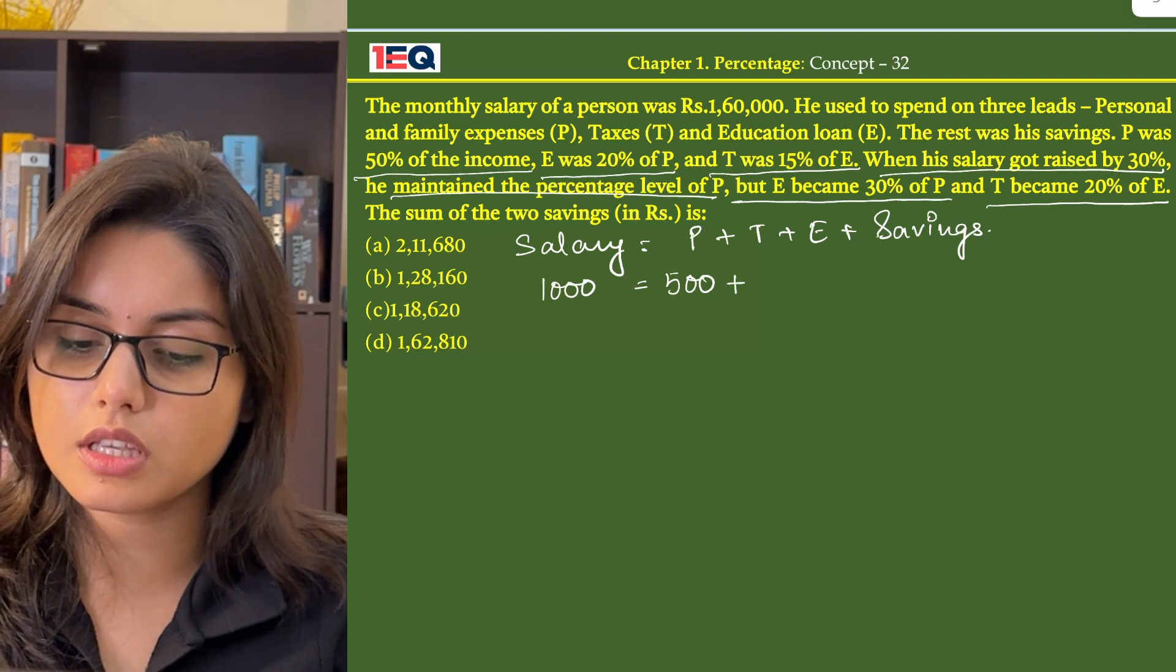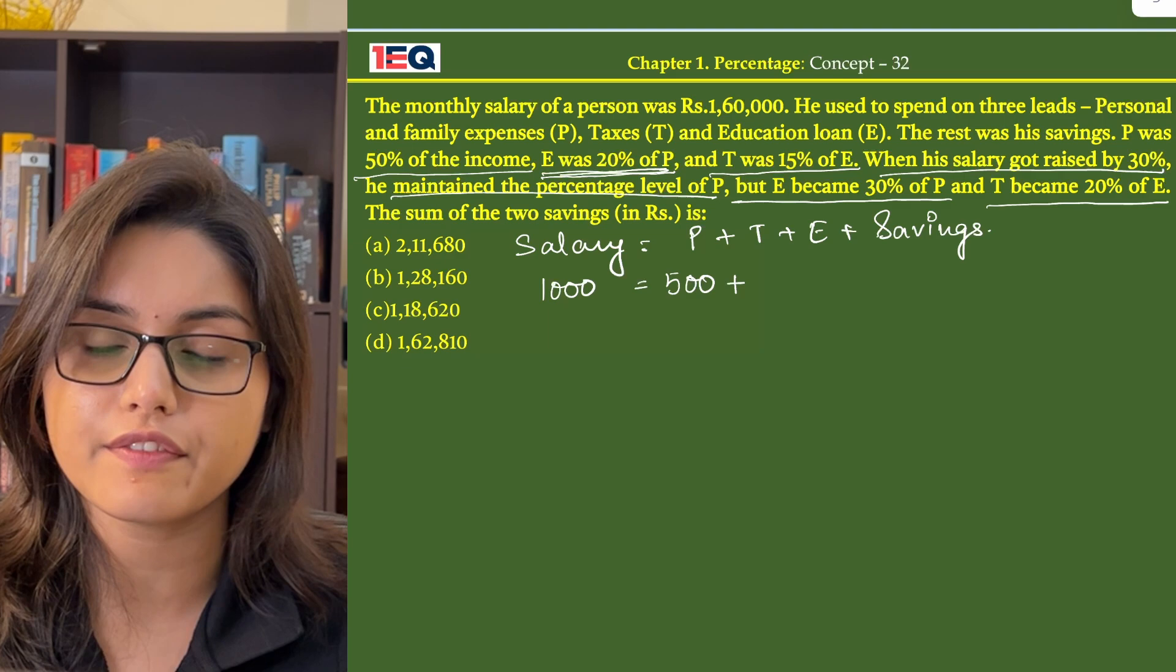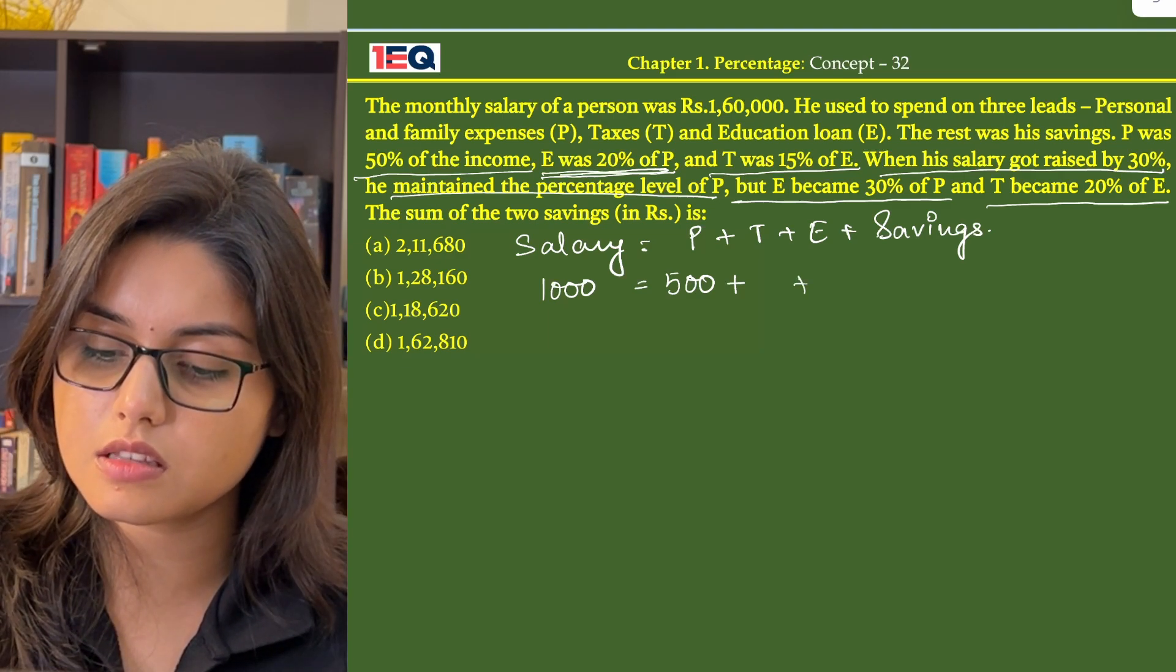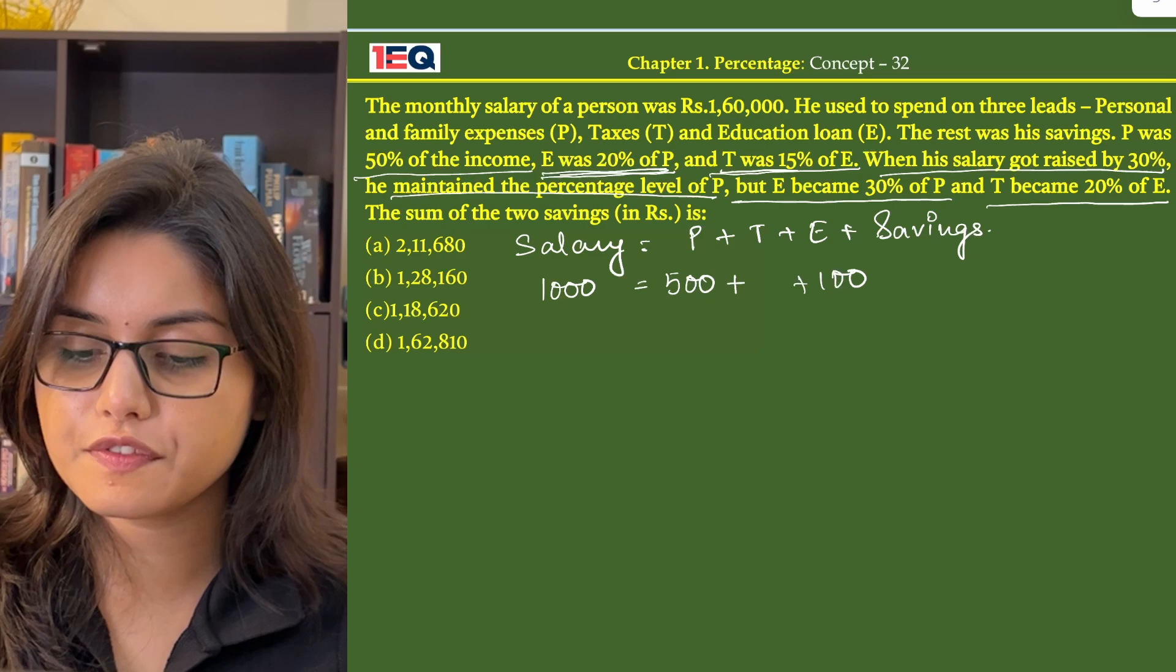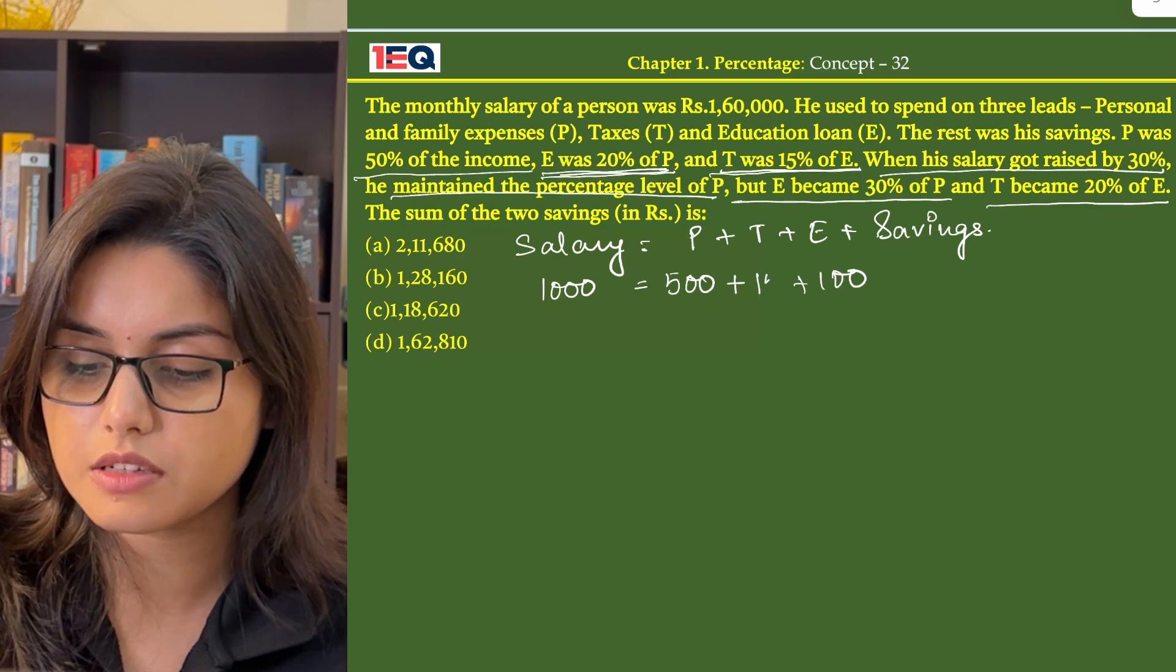Next we know E was 20% of P. So 20% means 1 by 5, that means E is 100. T was 15% of E, that means 15% of 100 is 15.